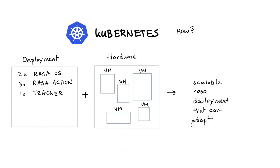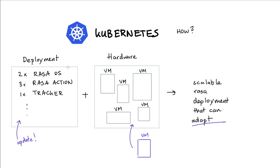It's worth zooming in on the word 'adapt.' We might want to add another VM to the cluster — the ability to add and remove resources is something Kubernetes can handle for you. Another thing we might want to do is update our deployments, for example, going from two Rasa open source containers to three. That's an update that Kubernetes can run on our behalf.